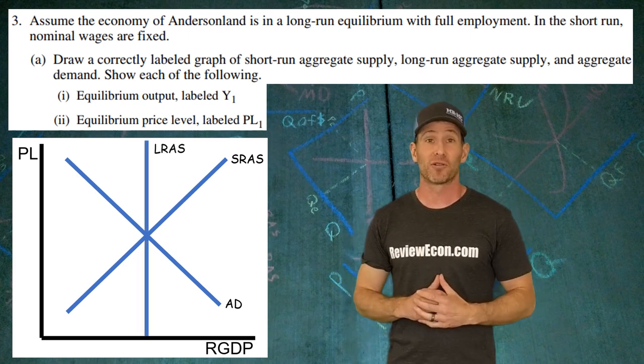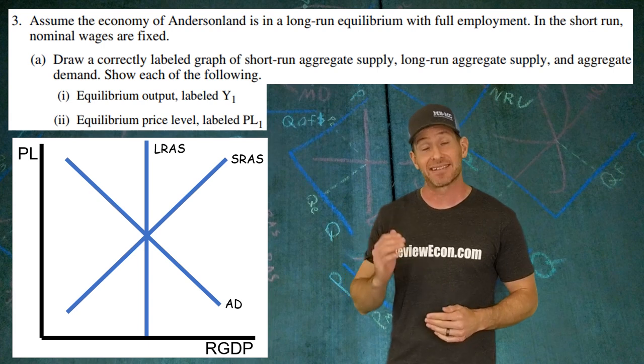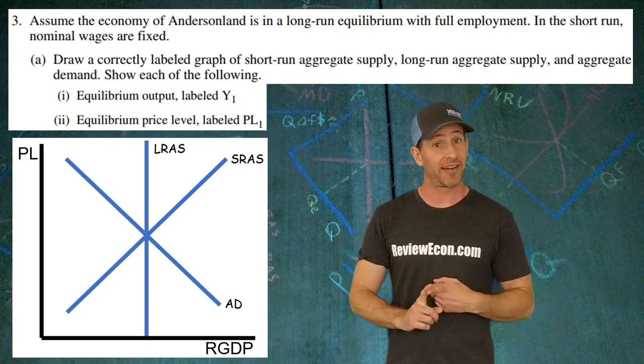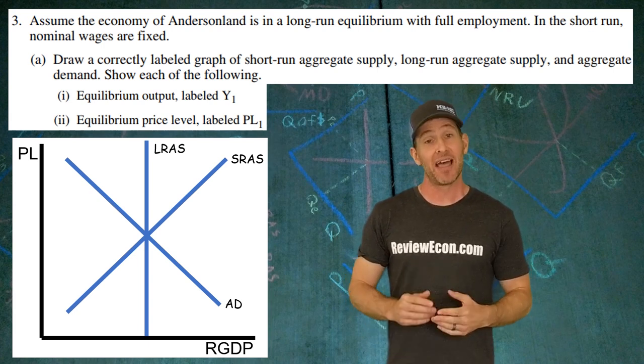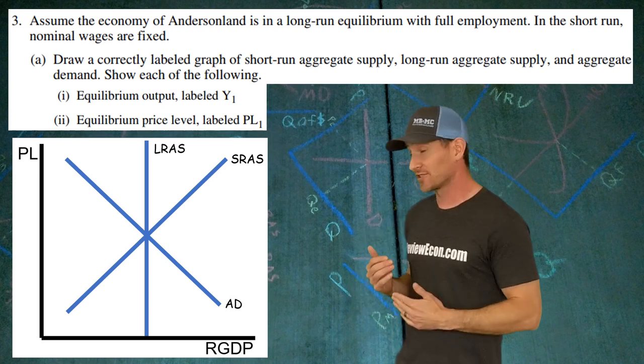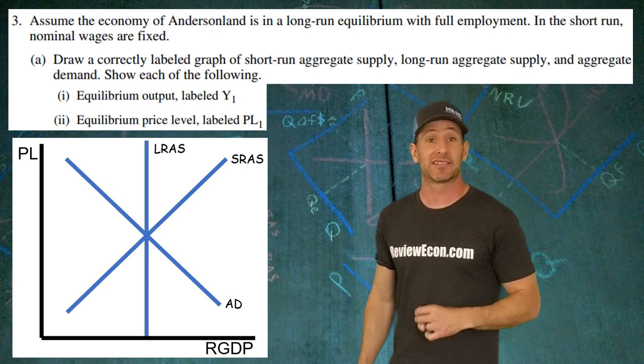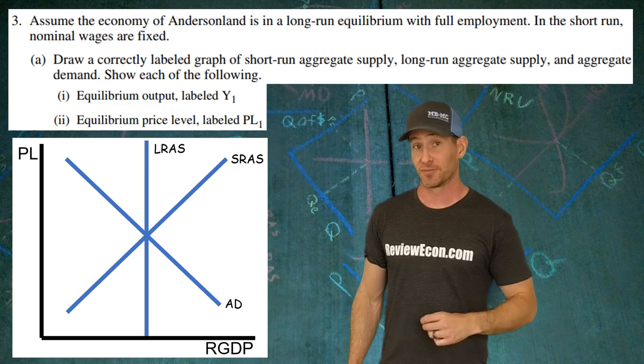And a vertical long-run aggregate supply curve at the intersection between the short run aggregate supply curve and the aggregate demand curve. That intersection where all three curves line up like that, that indicates long-run equilibrium and full employment.